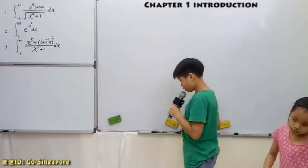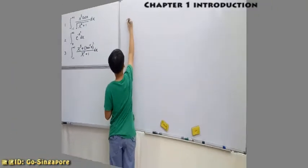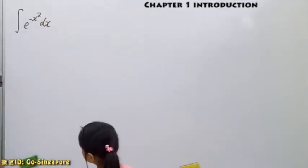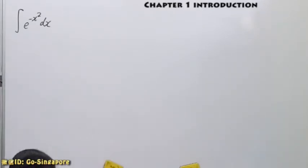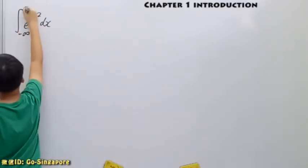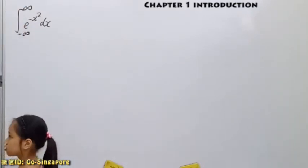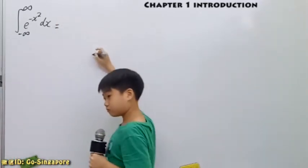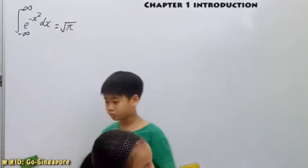For the last lesson, we have one very special question. This is the indefinite integral form, right? But we cannot solve it. If we add the boundary, strangely, we could solve it. And what is this answer? Square root pi. Yes, correct.